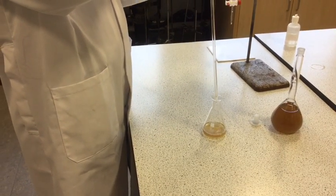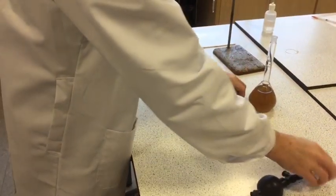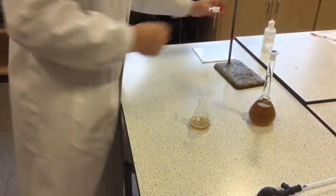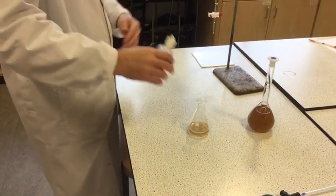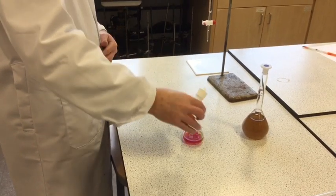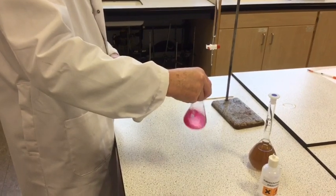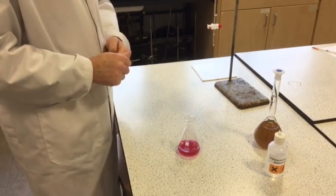Now, this solution should be alkaline, because it contains some of the unreacted, the excess sodium hydroxide. So, we add two or three drops of phenolphthalein indicator, and we get the pink color we get in alkaline solutions.